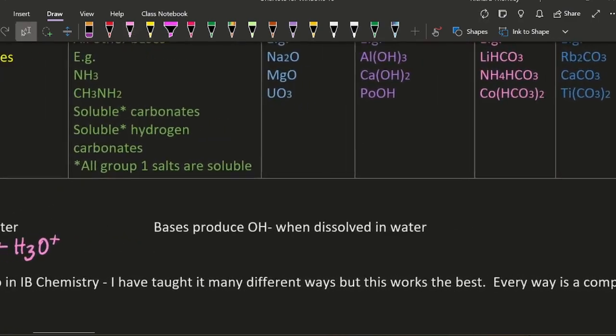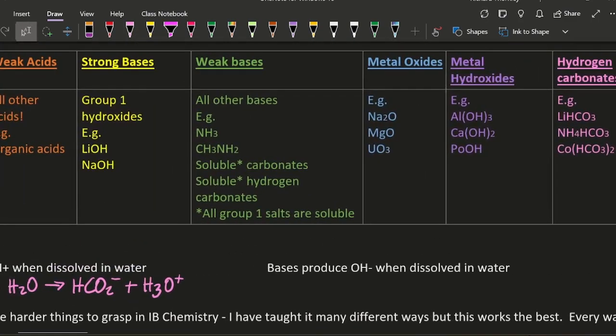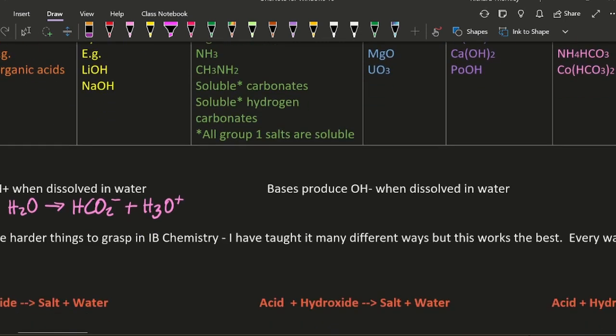Okay, bases produce OH minus when dissolved in water. Well, that's pretty straightforward. Well, what about these bases here? There's no O. How's that going to work? So sometimes you have to think a little bit extra, put the water in, and then you'll get the OH minus, and you'll get the ammonium ion.